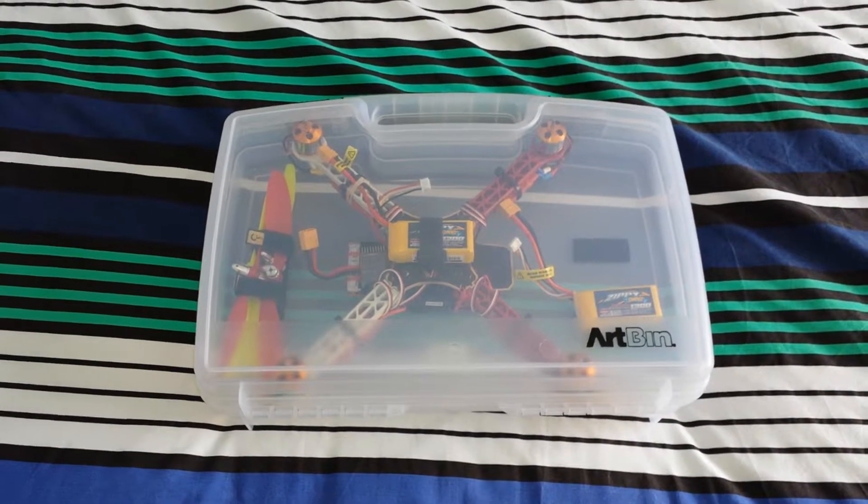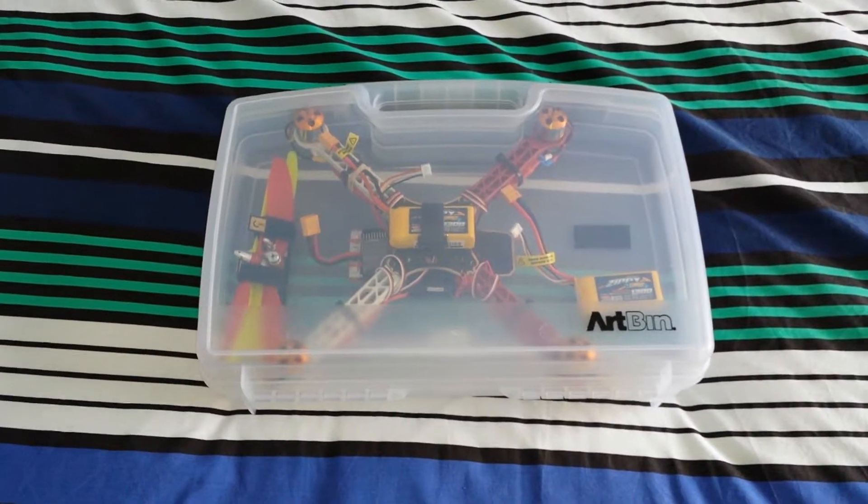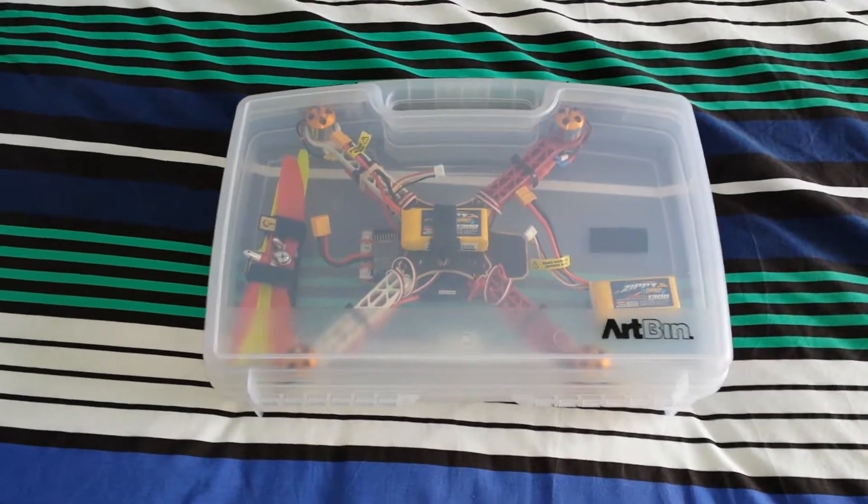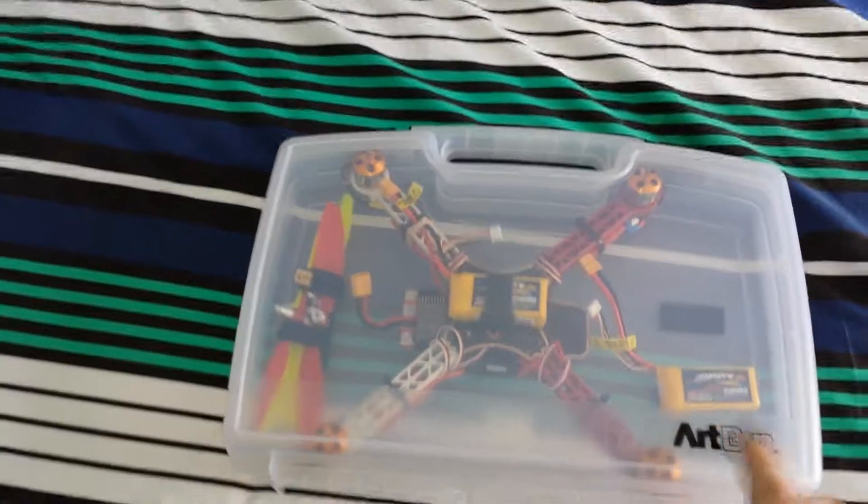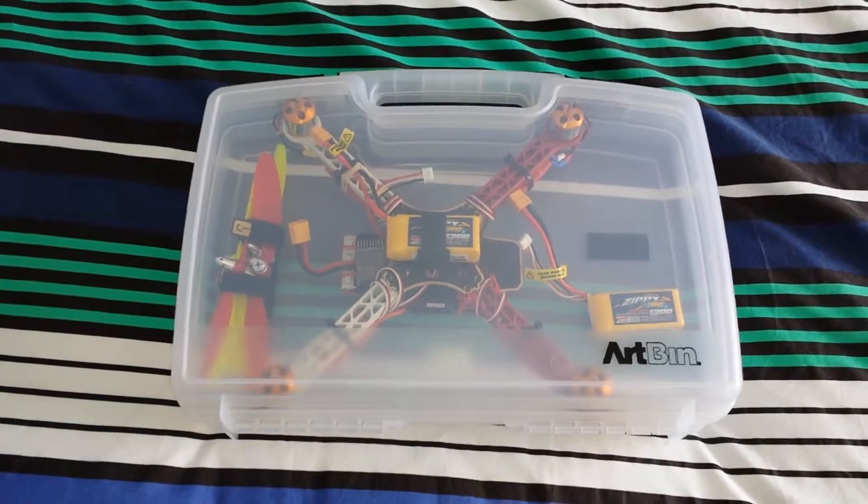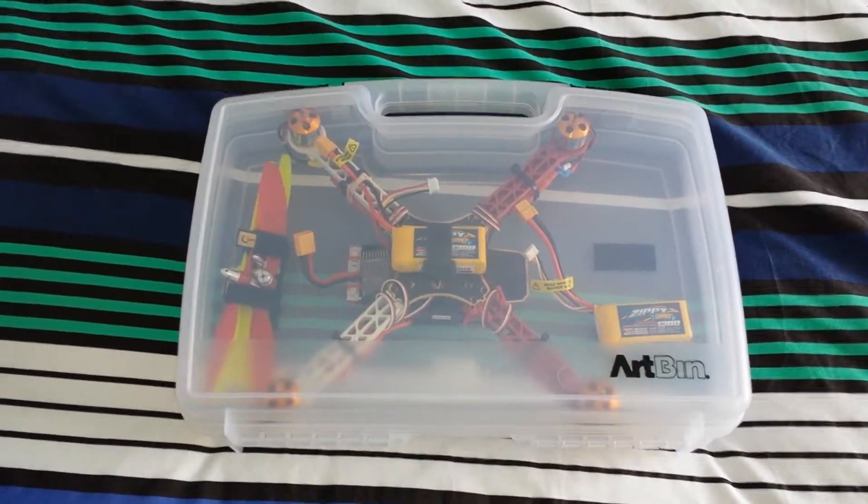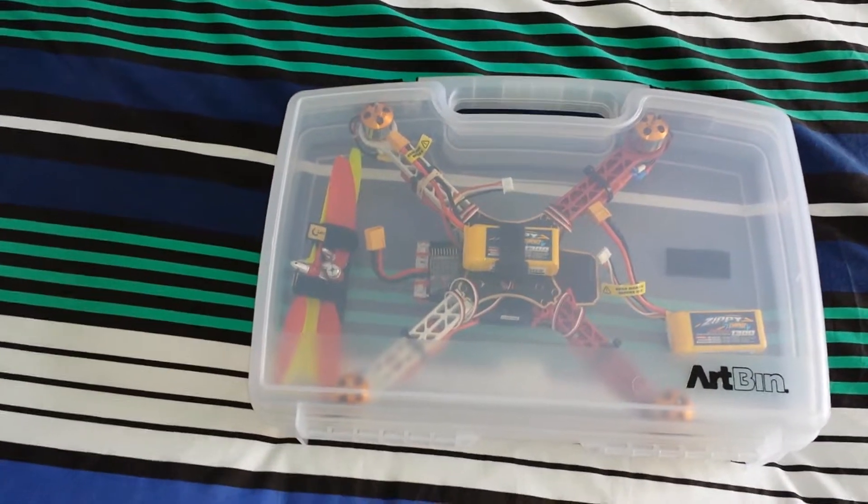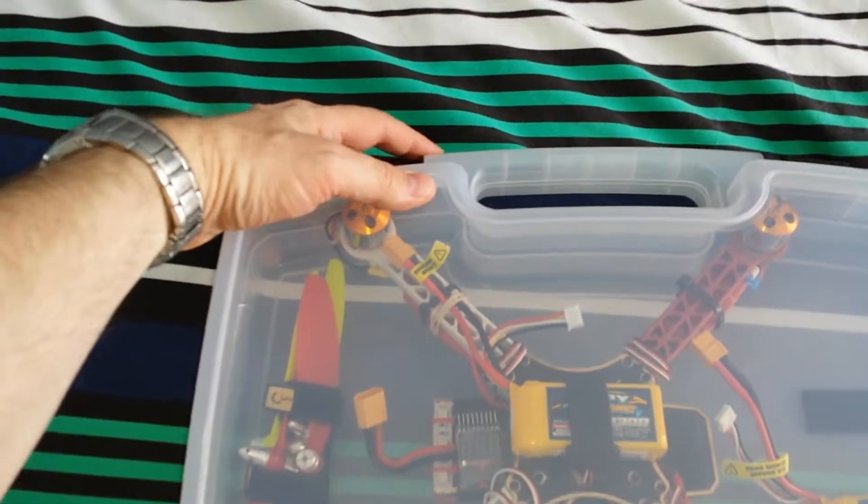This should be a really short video. It's the 11th of April 2015 and I've just been into Hobbycraft in the UK and seen this Art Bin art case. It's currently on half price, it cost me seven pound fifty pence, and I thought at the time that might fit my 350 or 330 quadcopter.